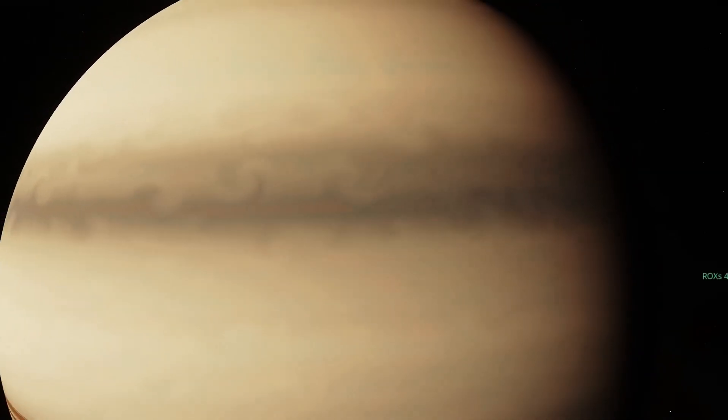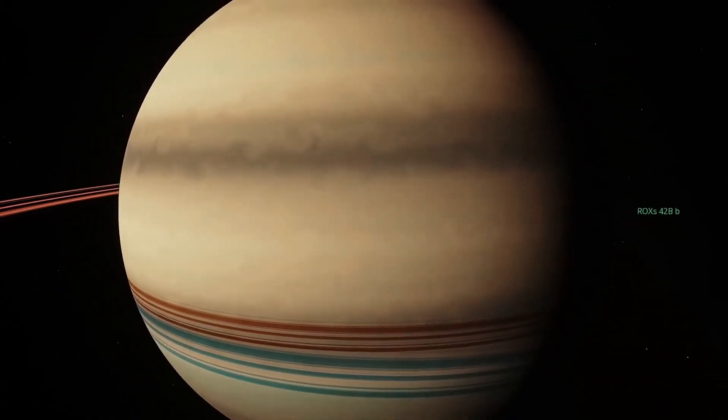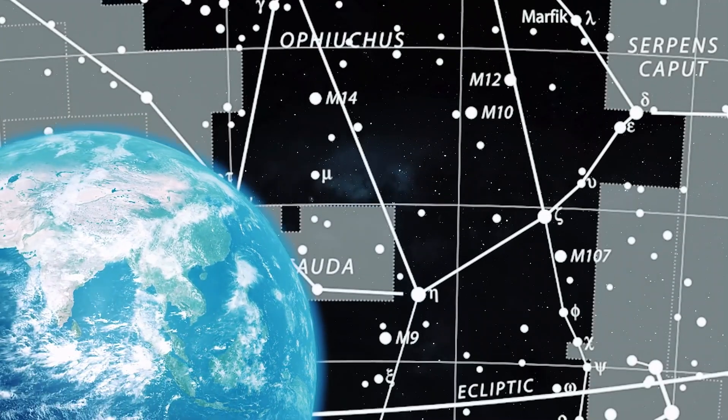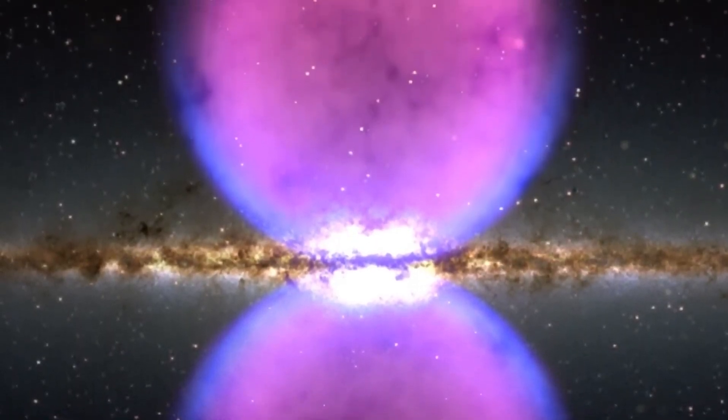Moving farther, we encounter the gas giants Jupiter and Saturn, the largest planets in our solar system, lacking solid surfaces. Subsequently, we pass by Uranus and Neptune, referred to as ice giants.